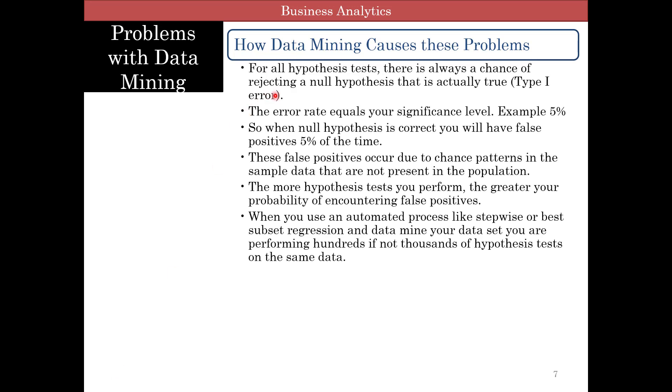So how does this happen? Well, when you do a hypothesis test, there is a type 1 error, which is the chance of rejecting the null hypothesis that is actually true. So let's say we have a type 1 error or alpha 5%. This is 5% false positives. So every time you're doing a hypothesis test, you have a 5% false positives. The more hypothesis tests you perform, the greater your probability of encountering false positives. So when you use an automated process like stepwise regression or best subset regression and data mine your data, you're performing hundreds if not thousands of hypothesis tests. So if each hypothesis test is 5% and you're performing thousands, you add them up, you're definitely going to get some patterns.